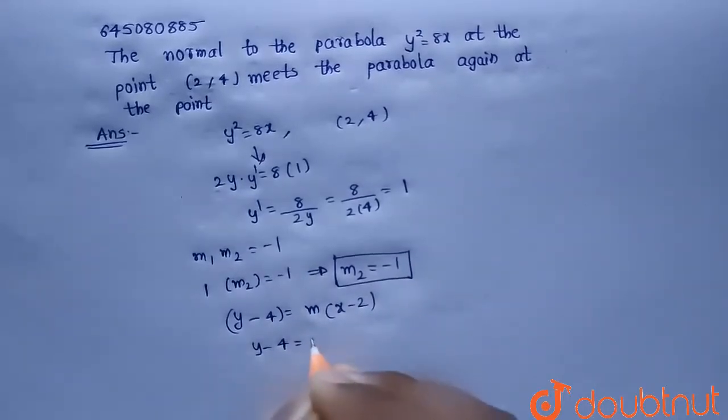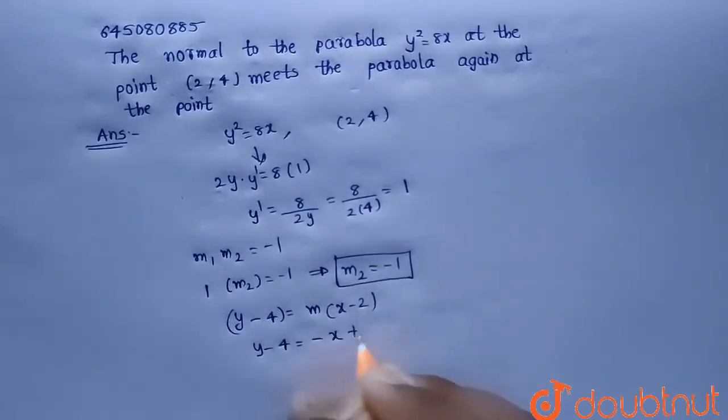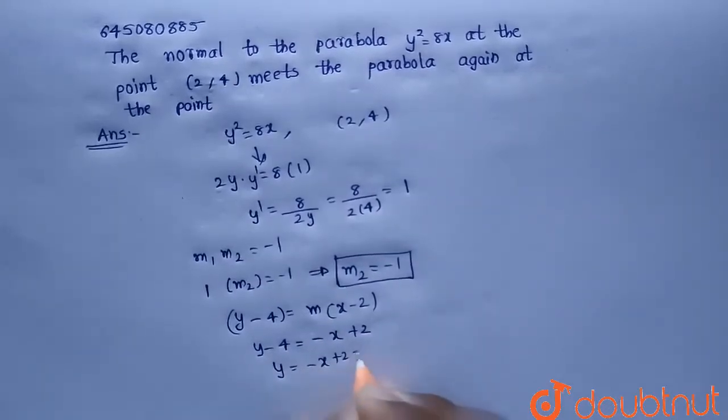So from this y - 4 = -x + 2. That is y = -x + 2 + 4. So from this y = 6 - x.